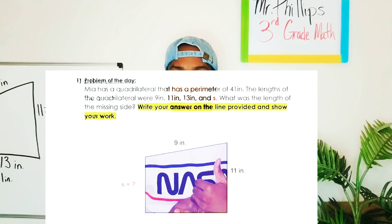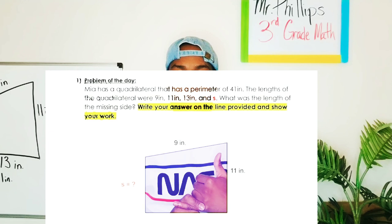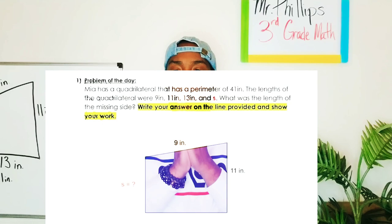Mia has a quadrilateral that has a perimeter of 41 inches. The lengths of the quadrilateral are 9 inches, 11 inches, 13 inches, and S. What was the length of the missing side? Write your answer on the line provided and show your work.